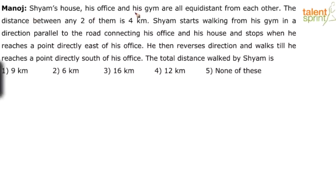Shyam's house, his office and his gym are all equidistant from each other. The distance between any two of them is 4 kilometers. Shyam starts walking from his gym in a direction parallel to the road connecting his office and his house, and stops when he reaches a point directly east of his office. He then reverses direction and walks till he reaches a point directly south of his office. What is the total distance walked by Shyam?